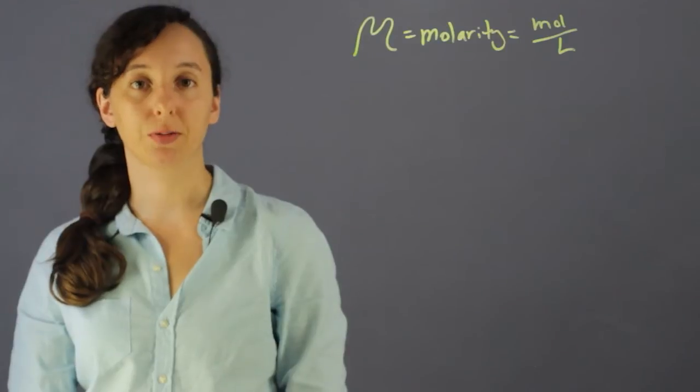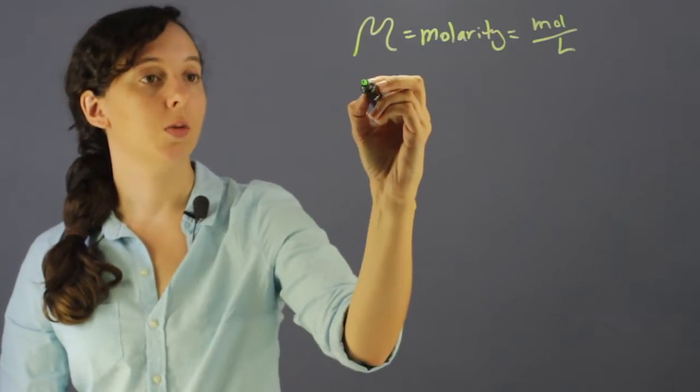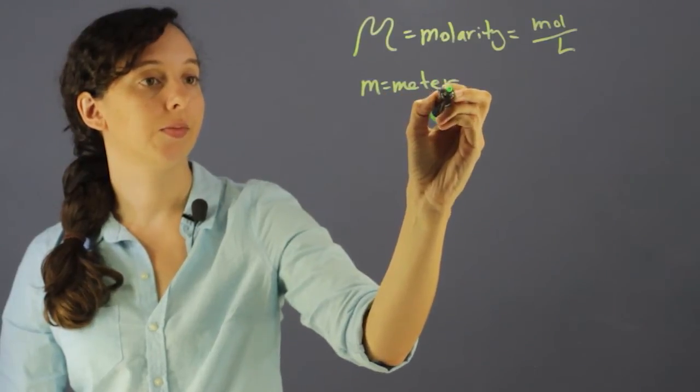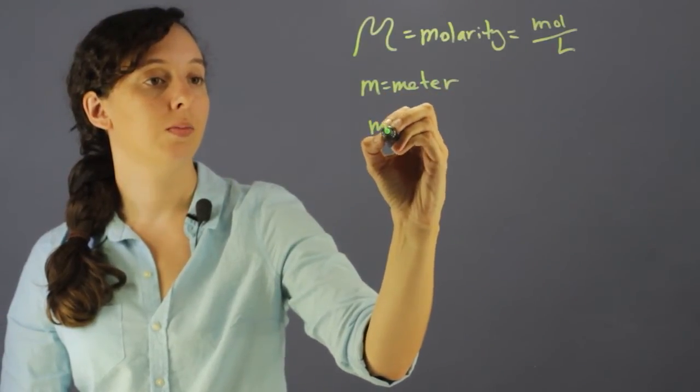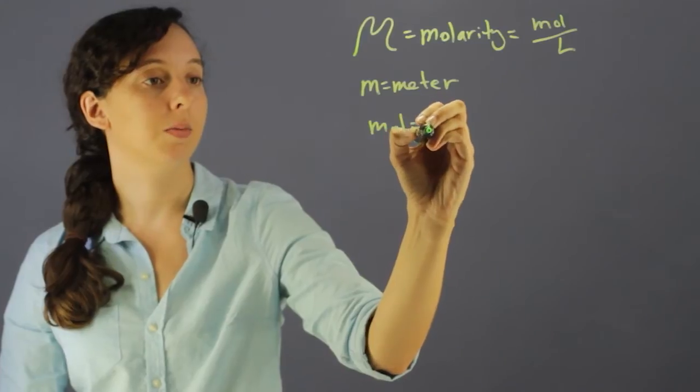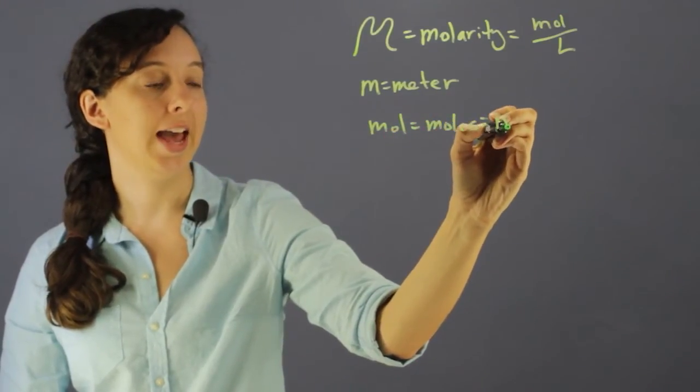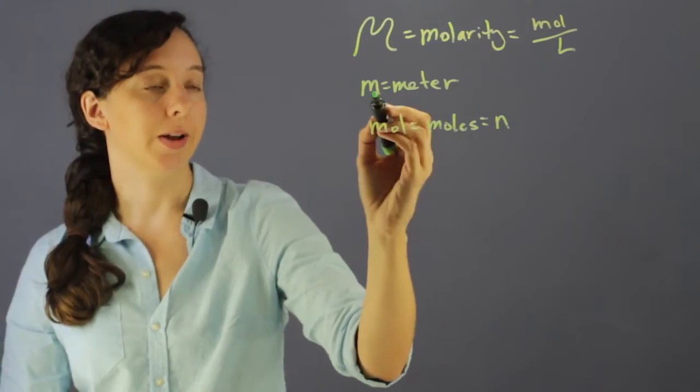So just to go over some other m's in chemistry, the small m with nothing special about it means meter, and mol means number of moles, and that's also expressed sometimes as n, since m is already taken up by meter.